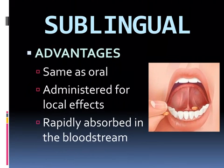The advantages of sublingual are the same as oral: administered for local effects and rapidly absorbed in the bloodstream. Under your tongue, we have a lot of blood vessels, so when we place medication there, it is directly absorbed into your bloodstream through your blood vessels. That is why it is rapidly absorbed.